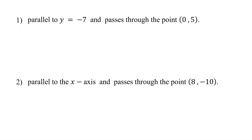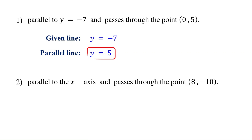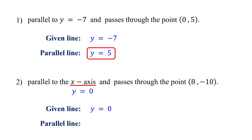If you graph this, the line crosses the y-axis at negative 2, passes through the given point negative 5 comma negative 2, and is parallel to the given line. In general, if the given line is in the form y equals a constant, the parallel line is y equals the y-coordinate of the given point. For the first practice problem, the given line is y equals negative 7, which is a horizontal line. A parallel line is also horizontal, with the equation y equals the y-coordinate of the given point. The second problem says the line is parallel to the x-axis. Note that the x-axis corresponds to y equals 0, so a parallel line is also horizontal, with the equation y equals the y-coordinate of the given point.